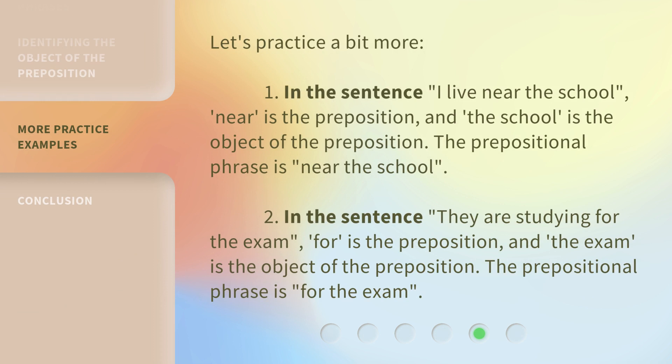Let's practice a bit more. One: in the sentence "I live near the school," "near" is the preposition and "the school" is the object of the preposition. The prepositional phrase is "near the school."